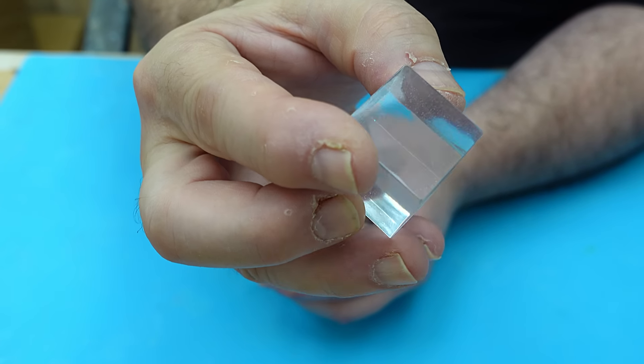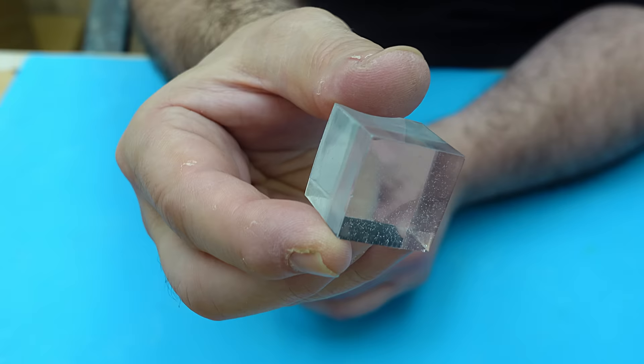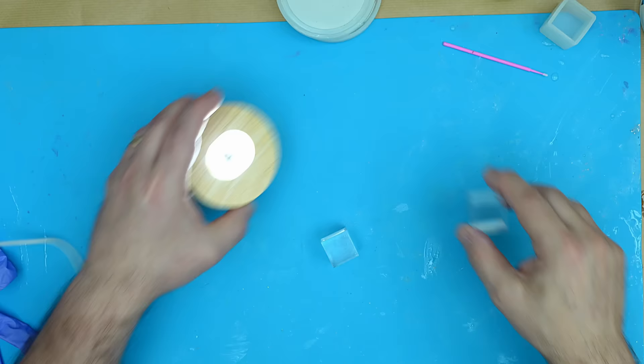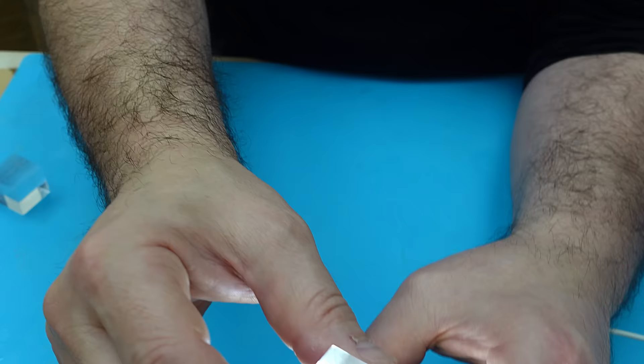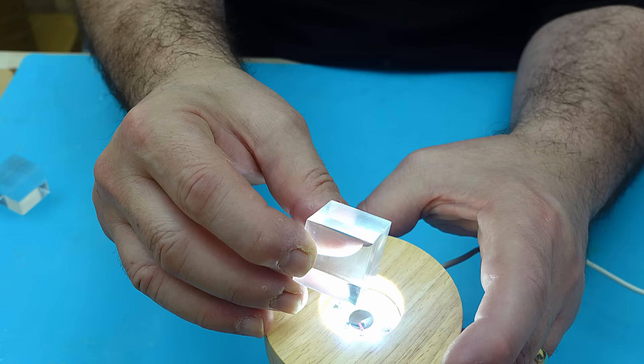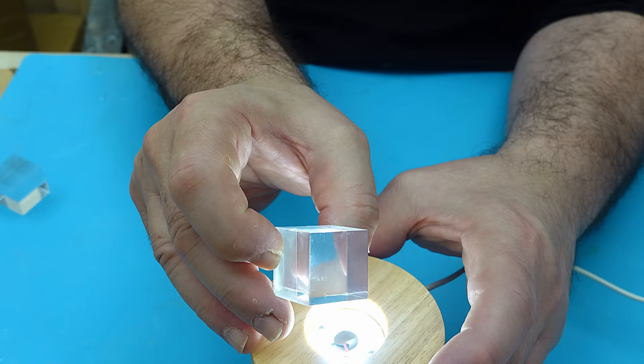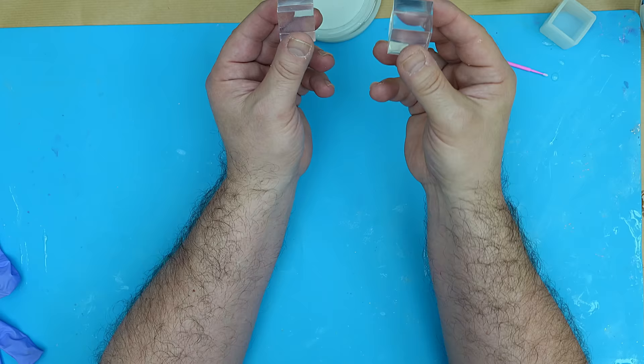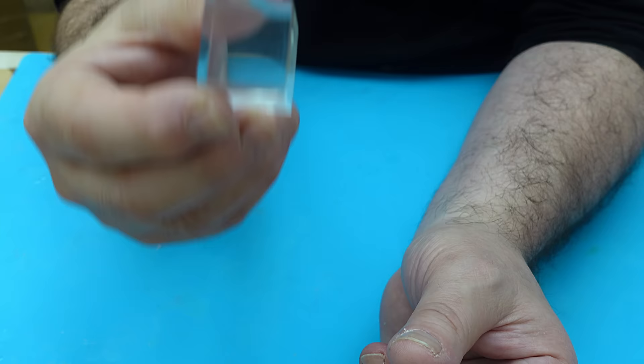Would you prefer your resin when it's cured to be full of bubbles and micro bubbles like this one, or would you prefer your resin once it's cured to be lovely and clear and micro bubble free like this one? Keep watching this video and you will see how easy it is to get a clear bubble free resin cast as opposed to one with these pesky bubbles in.